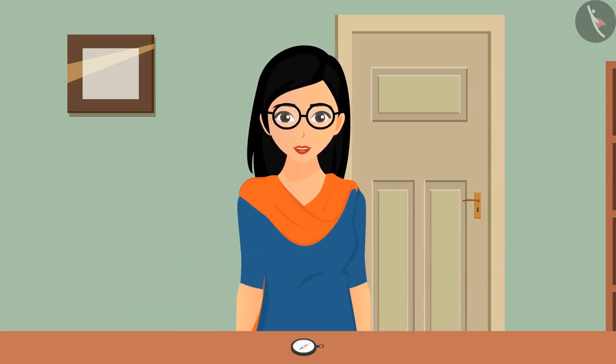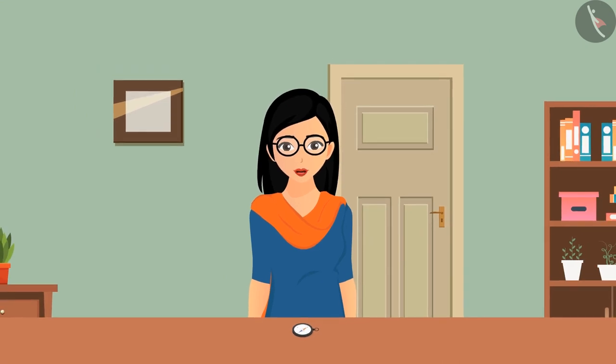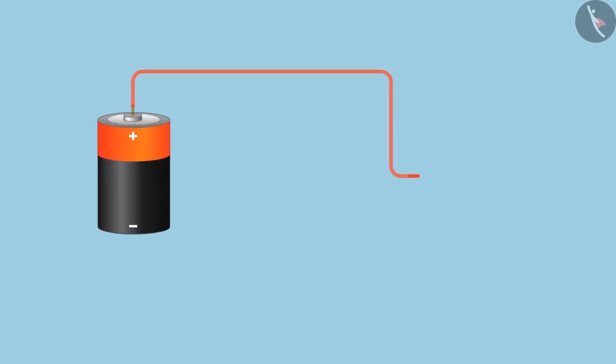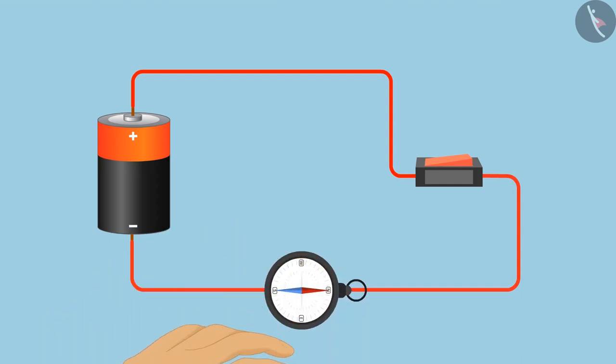To perform this experiment we need a battery, a piece of thick copper wire, a compass and connecting wires. The battery must be connected to the two ends of the copper wire via switch. Place the compass over the copper wire in such a way that the needle of the compass and the copper wire are parallel to each other.